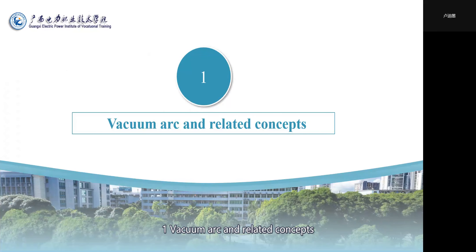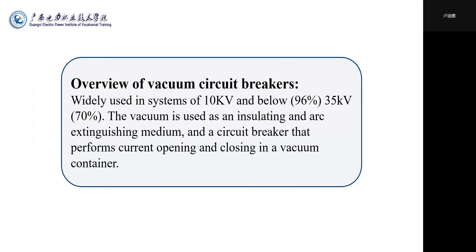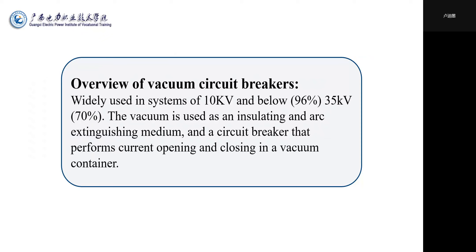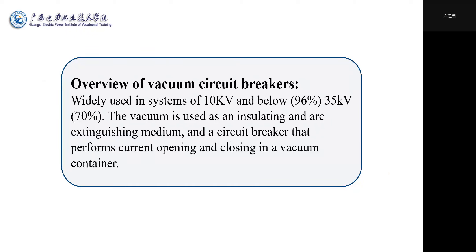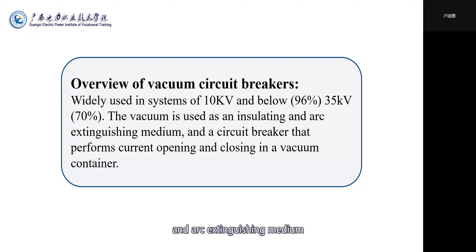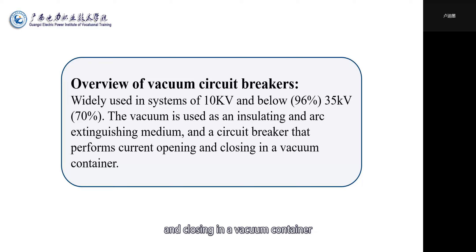Number one: vacuum arc and related concepts. Overview of vacuum circuit breakers — widely used in systems of 10 kV and below, up to 35 kV. Vacuum is used as an insulating and arc-extinguishing medium, and the circuit breaker performs current opening and closing in a vacuum container.